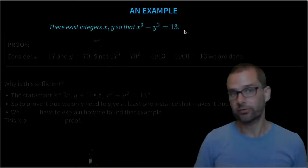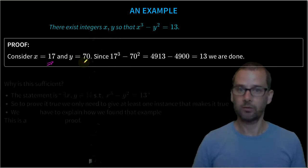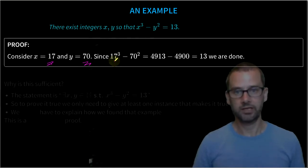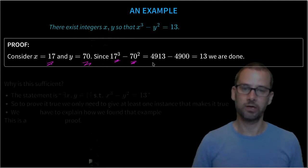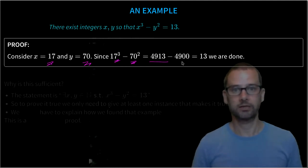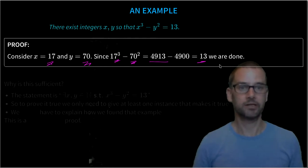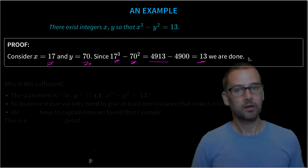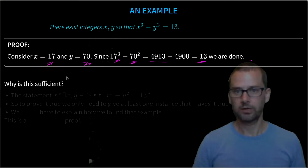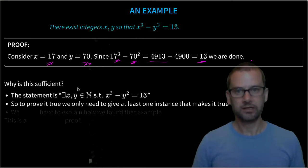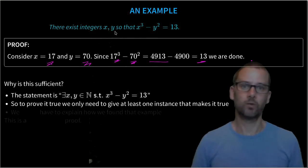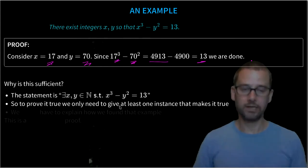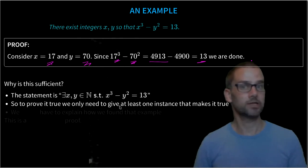Here's a complete proof that this is a true statement. Consider the number x = 17 and y = 70. Since 17³ - 70² = 4,913 - 4,900, that difference is 13, we're done. So why is this sufficient? The statement is just there exists x and y so that blah happens. To prove it to be true, we just need to give one example that makes it true, because it's that existential quantifier, there exists.